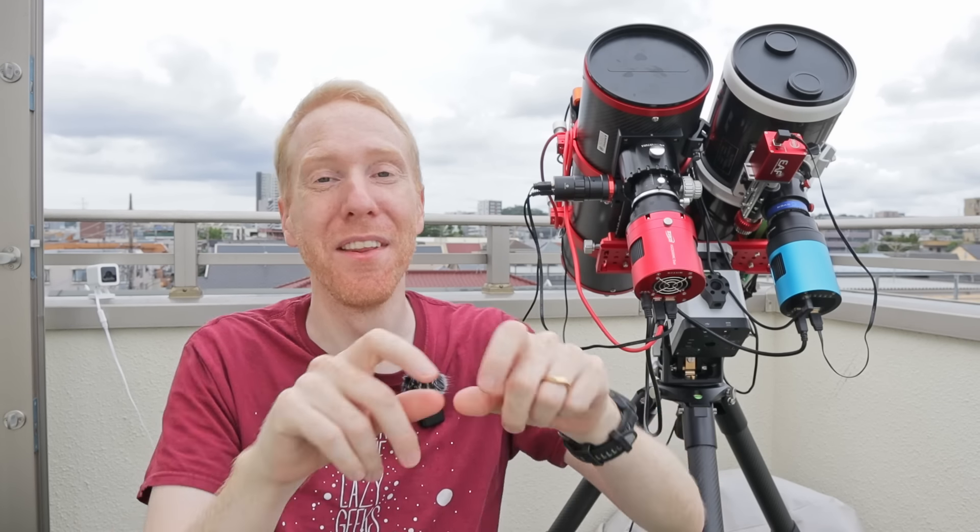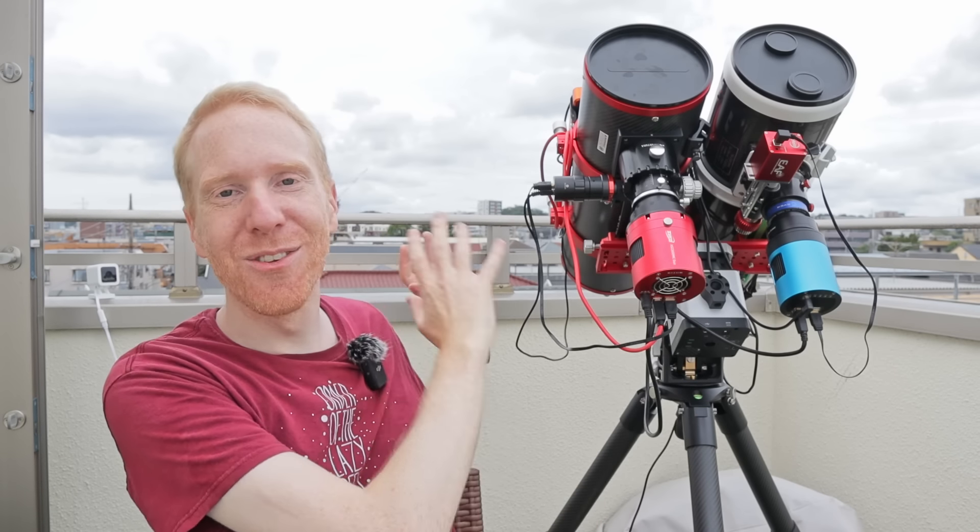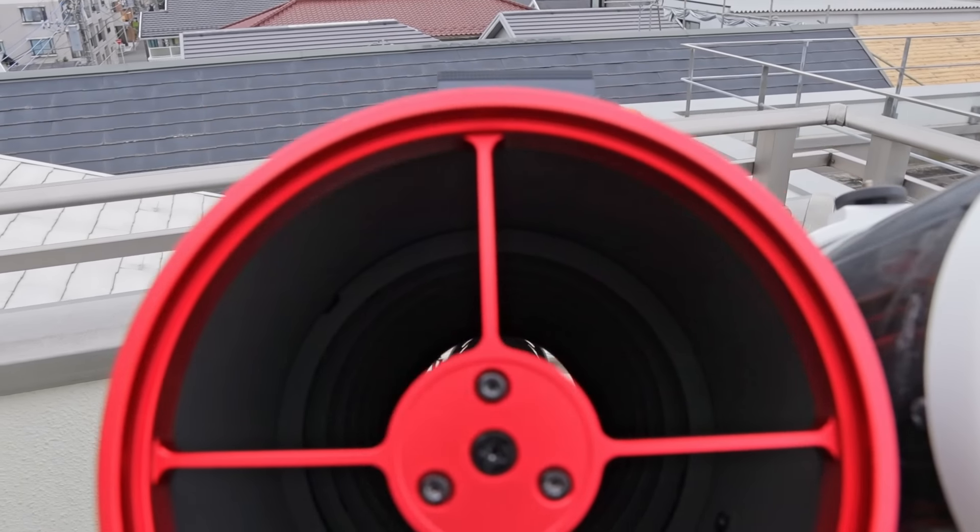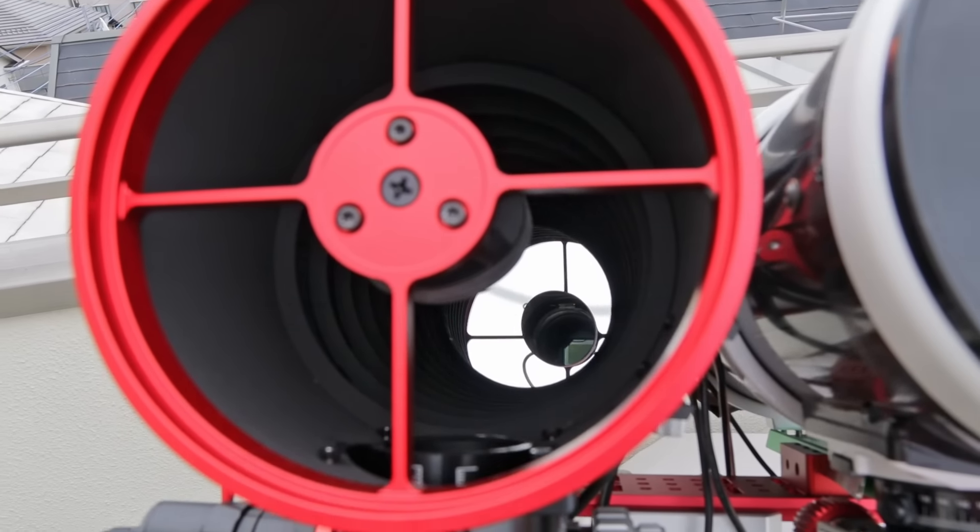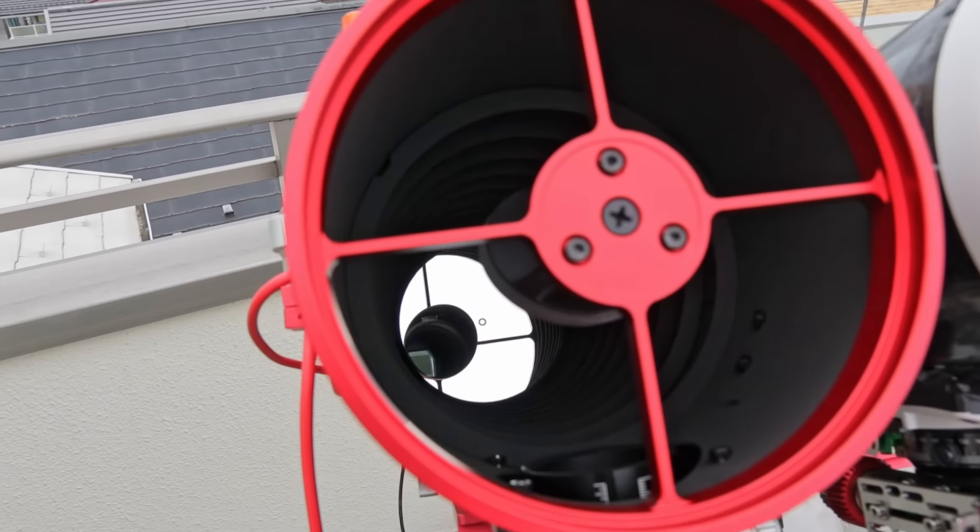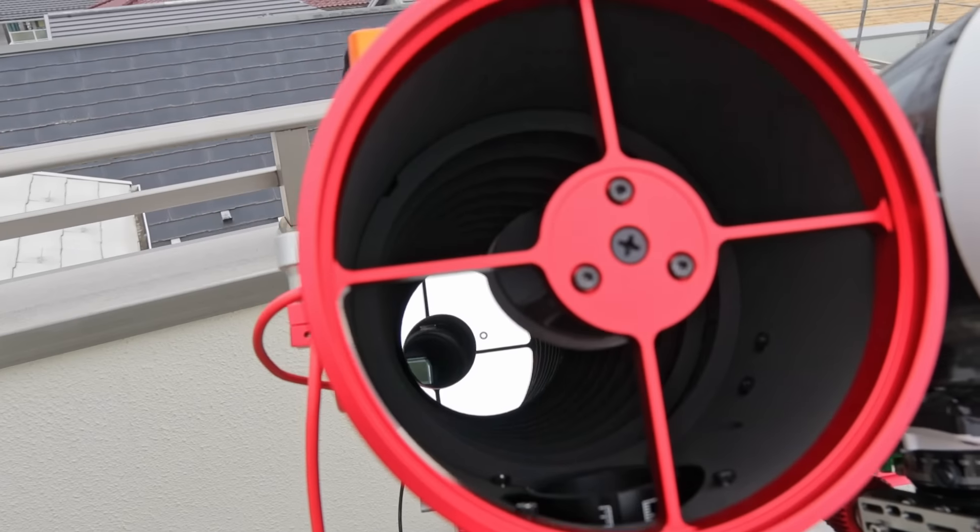But the big advantage is that in theory those flares around bright stars should be a thing of the past once you have your primary mirror mask in place. And so I went ahead and I used a free CAD tool to design my mirror mask, I 3D printed it and I installed it. So while it is somewhat difficult to see there are no mirror clip shapes now on the primary mirror, it's just a very round surface.